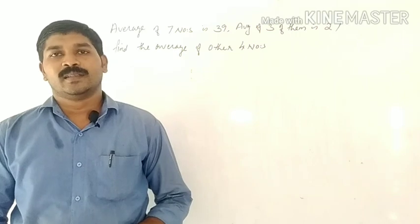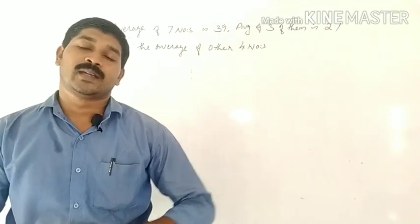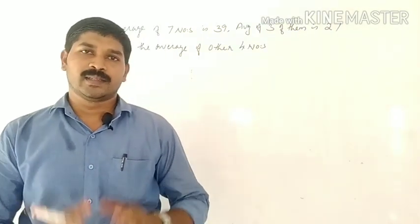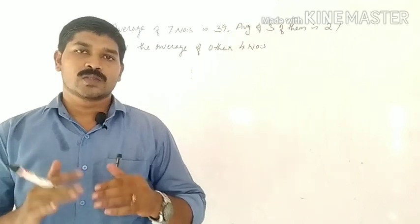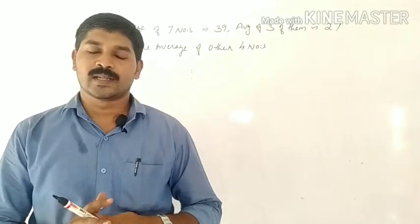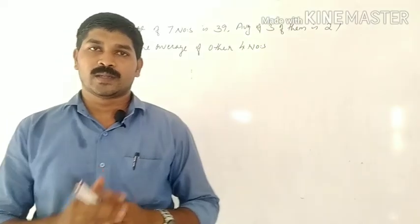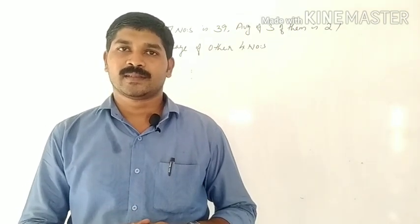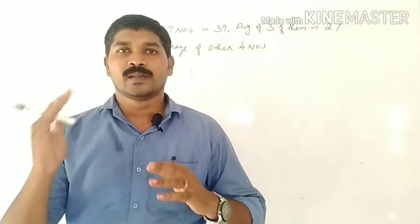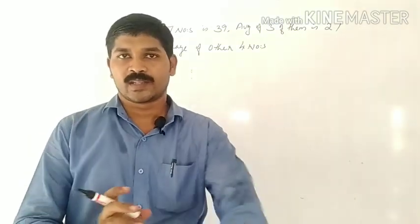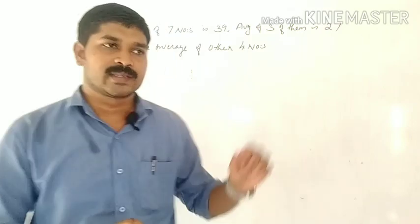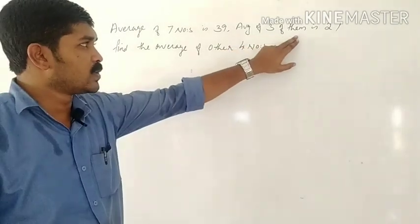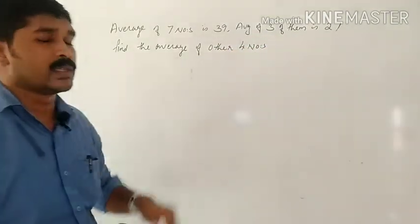Welcome back! How do I calculate the arithmetic mean? Let's look at the question. The average of 7 numbers is 39. The average of 3 of them is 27. Find the average of the other 4 numbers.